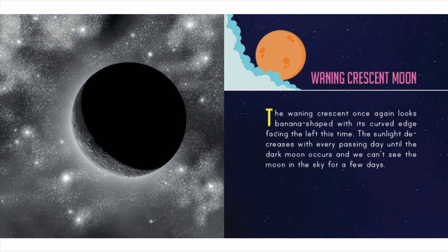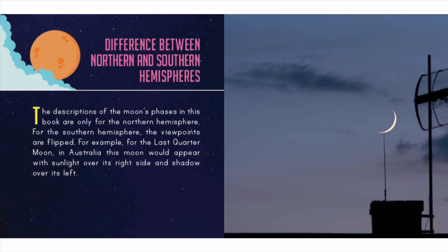The waning crescent moon once again looks banana-shaped, with its curved edge facing the left. The sunlight decreases with every passing day until the dark moon occurs and we can't see the moon in the sky for a few days. Note that the descriptions of the moon's phases in this book are only for the northern hemisphere — for the southern hemisphere the viewpoints are flipped. For example, for the last quarter moon in Australia, this moon would appear with sunlight over its right side and shadow over its left.